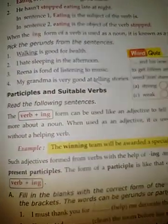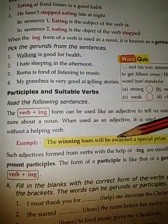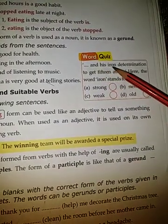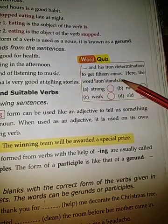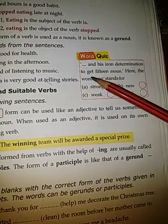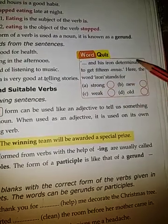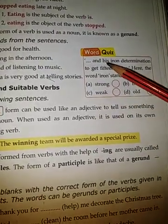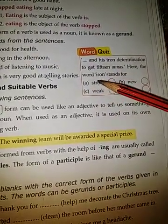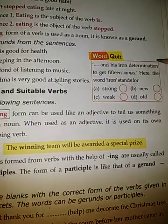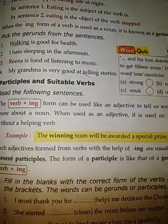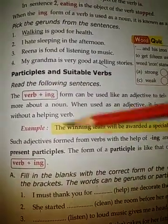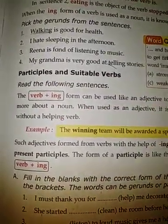Move to the next section. Here you can see: 'A student — dash — and his determination to get 15 annas.' The word in the blank stands for strong, new, weak, or old. Students, you all have to find out the correct answer and tick it. That's all for today's class. We will complete the rest of the grammar portion and exercises in our next class. Till then, take care. Good day.